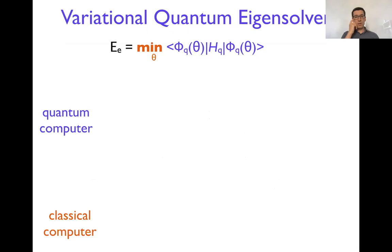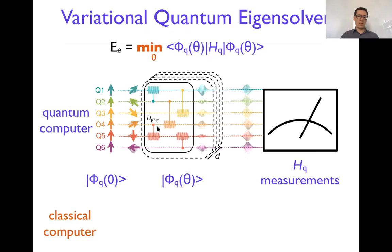All right, now how does the variational quantum eigensolver work? It's a hybrid algorithm where the minimization of energy is split in two parts. The first part is done on a quantum computer and the second part is done on a classical computer. So what quantum computer is doing, it sets up the quantum wave function. How does it do it? It starts with some qubits in some vacuum state. And then rotates the qubits, entangles them, essentially obtains the trial wave function, and then measures the Hamiltonian expectation value on this wave function.